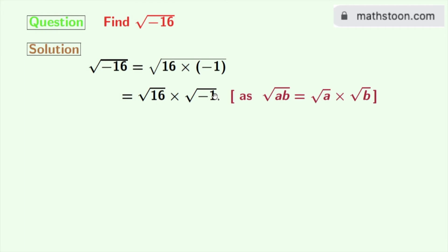As we all know that square root of AB is equal to square root of A times square root of B. Here A is 16 and B is minus 1.